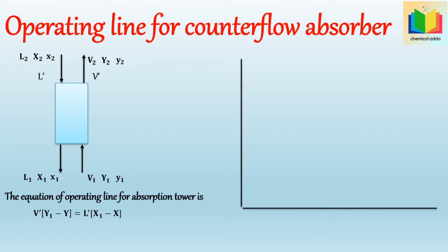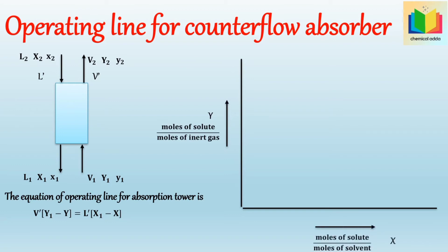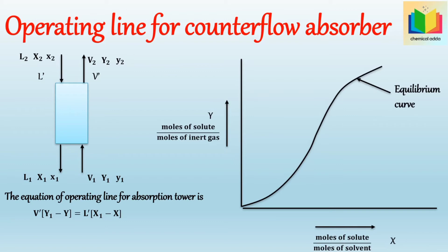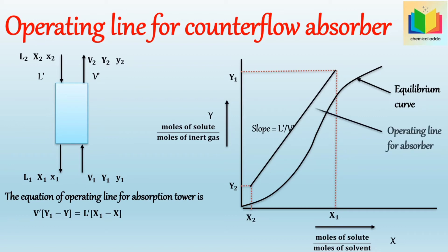We plot Y (mole ratio of solute to non-diffusing gas) on the y-axis and X (mole ratio of solute to non-volatile solvent) on the x-axis. An equilibrium curve is drawn using solubility data for the given system. The operating line for the counter-flow absorption operation is a straight line with slope equal to L'/V', passing through the points (X₁, Y₁) and (X₂, Y₂).